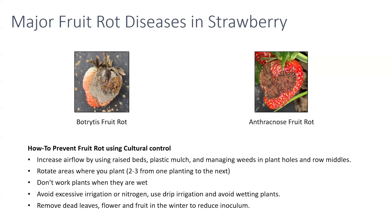Avoid excessive irrigation — that will stress plants and make them more prone to disease. Excessive nitrogen will make bigger canopies that are harder, more stuffy, and more likely to stay wet. Try to use drip irrigation when possible; you really want to avoid wetting plants anytime you can, because a lot of this disease is a function of how long the leaves are wet. We also recommend removing dead leaves, flowers, and fruit in the winter prior to warm-up, because this will reduce the inoculum in the field. Don't go out and remove green leaves — remove what's killed by deep freezes, the dead leaves, flowers, and fruit that weren't going to do anything.